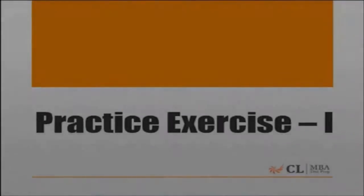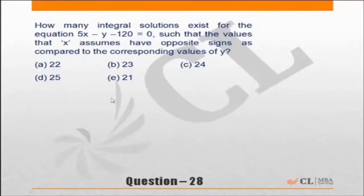Let us move to the first exercise. Question 28. How many integral solutions exist for the equation 5x - y - 120 = 0 such that the values that x assumes have opposite signs as compared to the corresponding values of y?